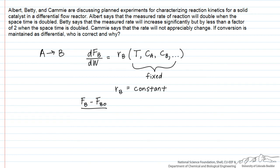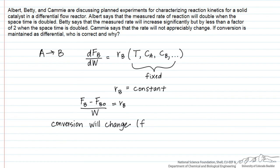What will change, but wasn't asked in this problem, is the conversion. If you decrease the spacetime but produce the same amount of B, you would really do that by changing your flow rate in of your reactant. Then your fractional conversion of how much you produce divided by how much you fed will be affected, and you would expect that to be affected by a factor of 2 in this case.